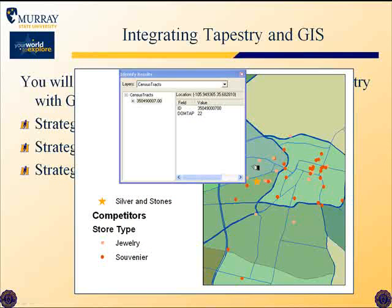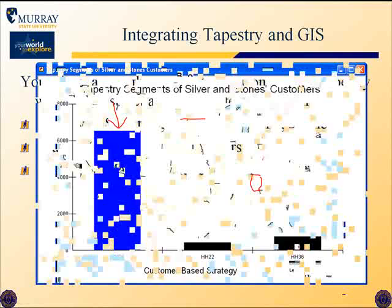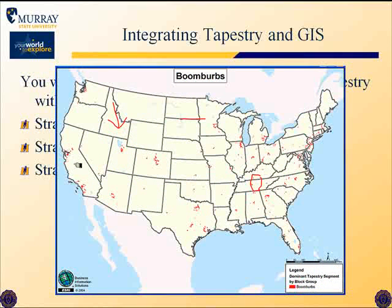For the second strategy, we can look in the area of the store and determine what tapestry segments live most immediately around it. Here's the store marked with a yellow star. In the census tracts around that store, the most common tapestry segment is segment 22, so we would look for concentrations of segment 22 around the country. The third alternative is to look for segments that match the characteristics of the newsletter customers — those who live outside of Santa Fe and still continue to buy. A profile of those existing customers shows they are in segment number 4, with distinct characteristics and concentrations around the country.